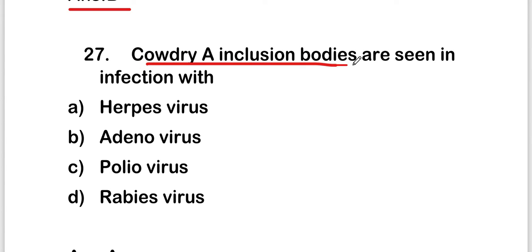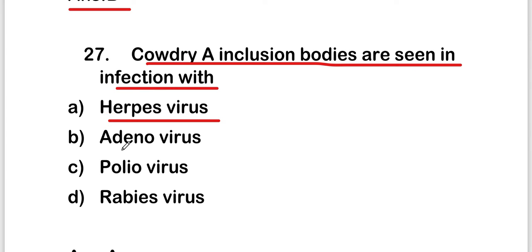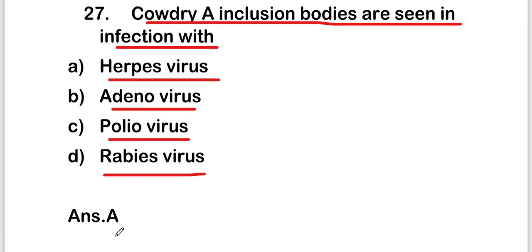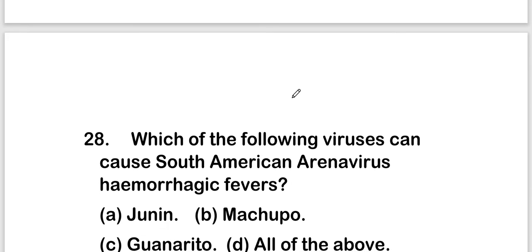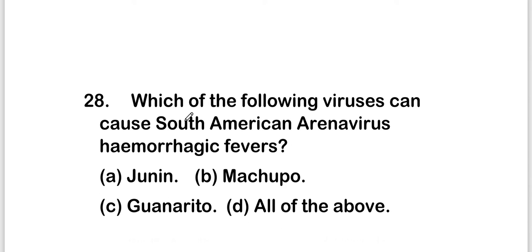Cowdry A inclusion bodies are seen in infection with which virus? The options are herpes virus, adenovirus, poliovirus, or rabies virus. The right answer is option A, herpes virus. So Cowdry A inclusion bodies are seen in herpes virus infection.